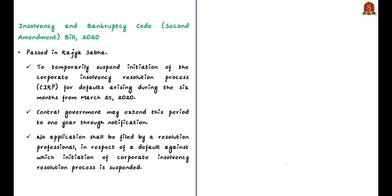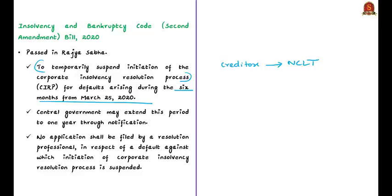The bill seeks to temporarily suspend initiation of the Corporate Insolvency Resolution Process or CIRP for certain types of defaults. Normally, creditors of the company approach the NCLT to initiate the CIRP in case of a default. The bill provides that for defaults arising during the six months from March 25, 2020, the CIRP can never be initiated by either the company or its creditors. The central government may extend this period to one year through notification. During this period, the CIRP can still be initiated for any defaults arising before March 25, 2020.